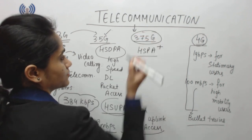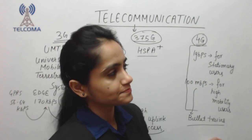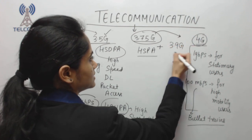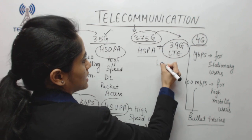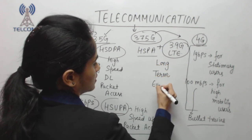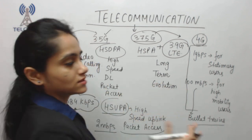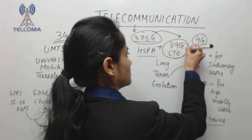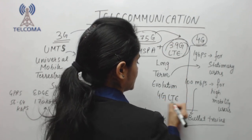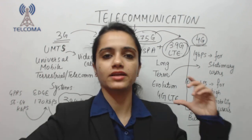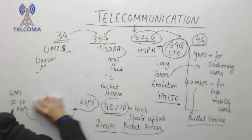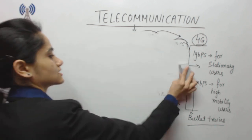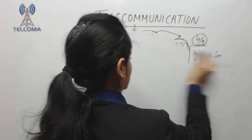From 3.75G we expected to reach 4G, but instead we got 3.9G called LTE — Long Term Evolution — a long-term evolution technology to achieve our 4G targets. LTE was launched and marketed as '4G LTE' so that revenue could fund further research into true 4th generation. Eventually we achieved the 4G targets: 1 gigabit per second and 100 Mbps, and 4G was successfully launched.